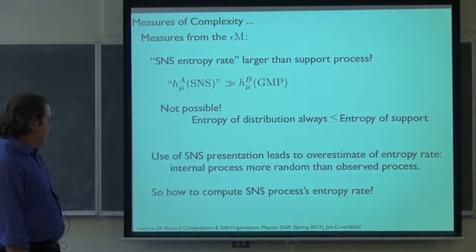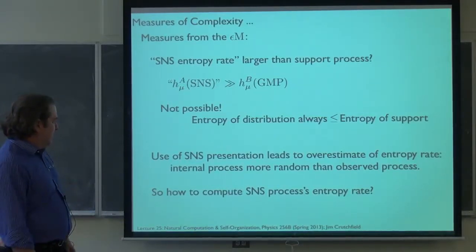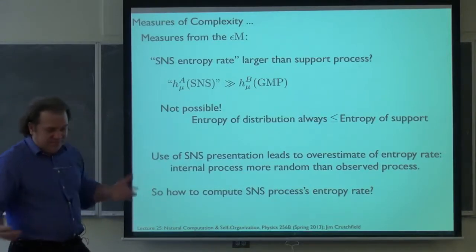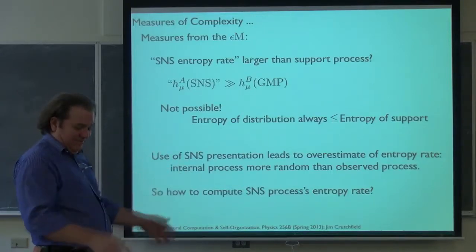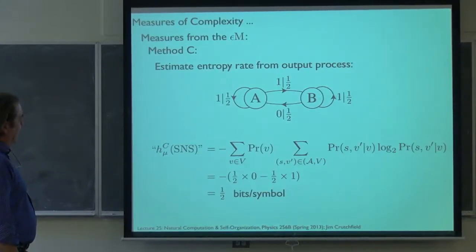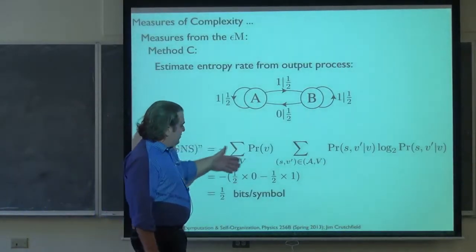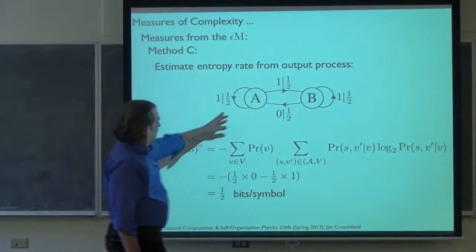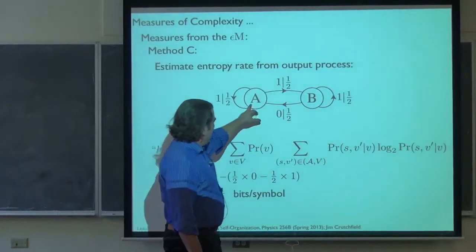We can also look at a direct application of the entropy rate formula for hidden processes. Here's the SNS non-unifilar presentation again. We go around to each state — again probability half — and look not at the state-to-state branching uncertainty, but the uncertainty in the symbols. If we're in state A half the time, the uncertainty in the symbols of the next time step — well, we know we're going to see a one, so there's no uncertainty in the symbols. In state B I'm there half the time, and I see either a one or a zero with a fair coin flip — half the time one bit of uncertainty — so that leads to, on average, half a bit per symbol.